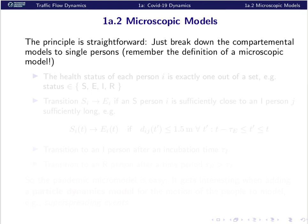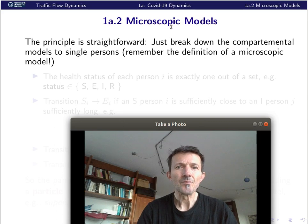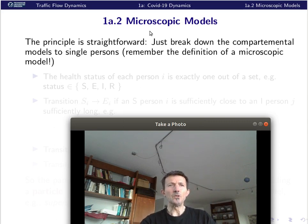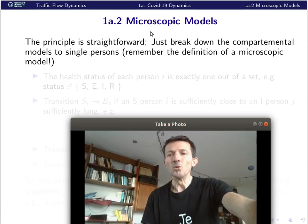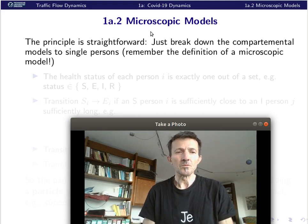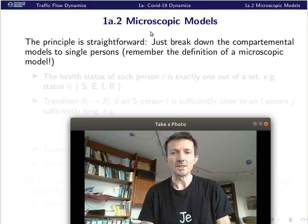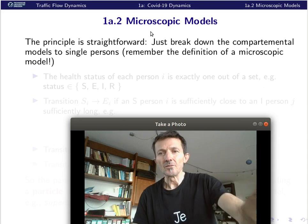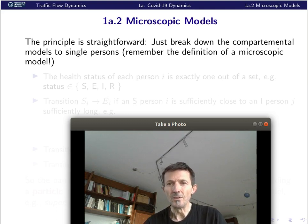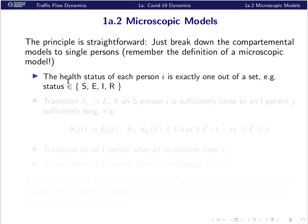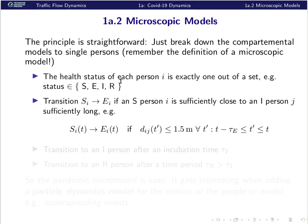Now let's come shortly to another model class: microscopic models. As you know from the first lecture, microscopic models reduce the dynamics to the smallest relevant unit - here, the single person. Single persons are just particles. Using the SEIR model, each person has a status that is exactly one of four possible values: S, E, I, or R.